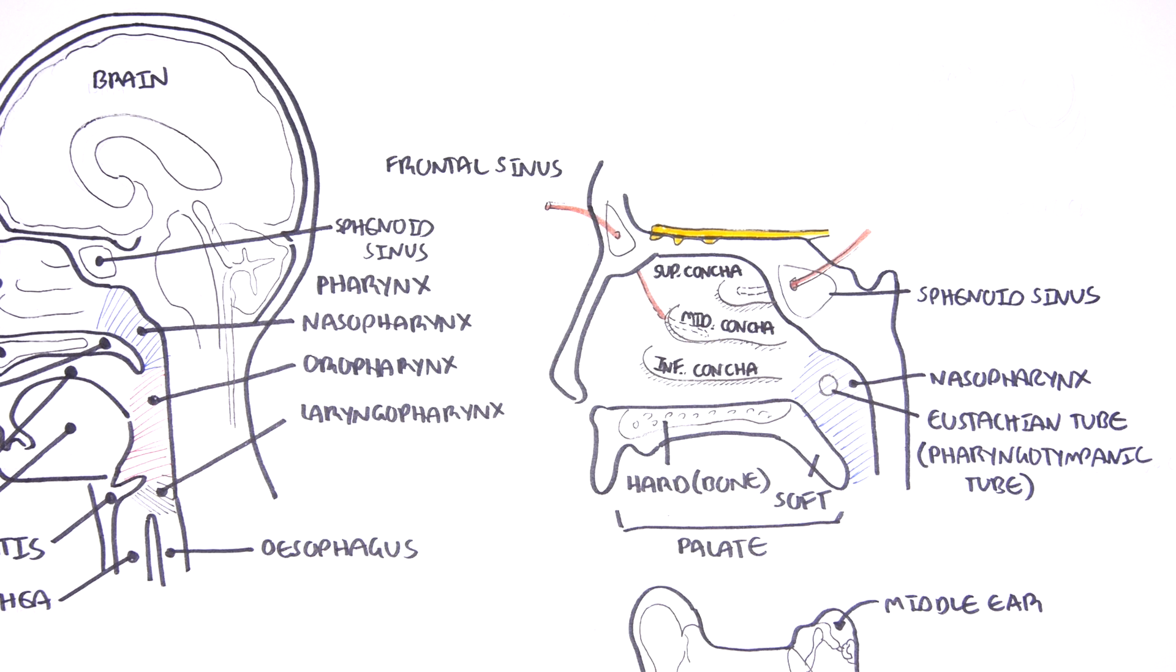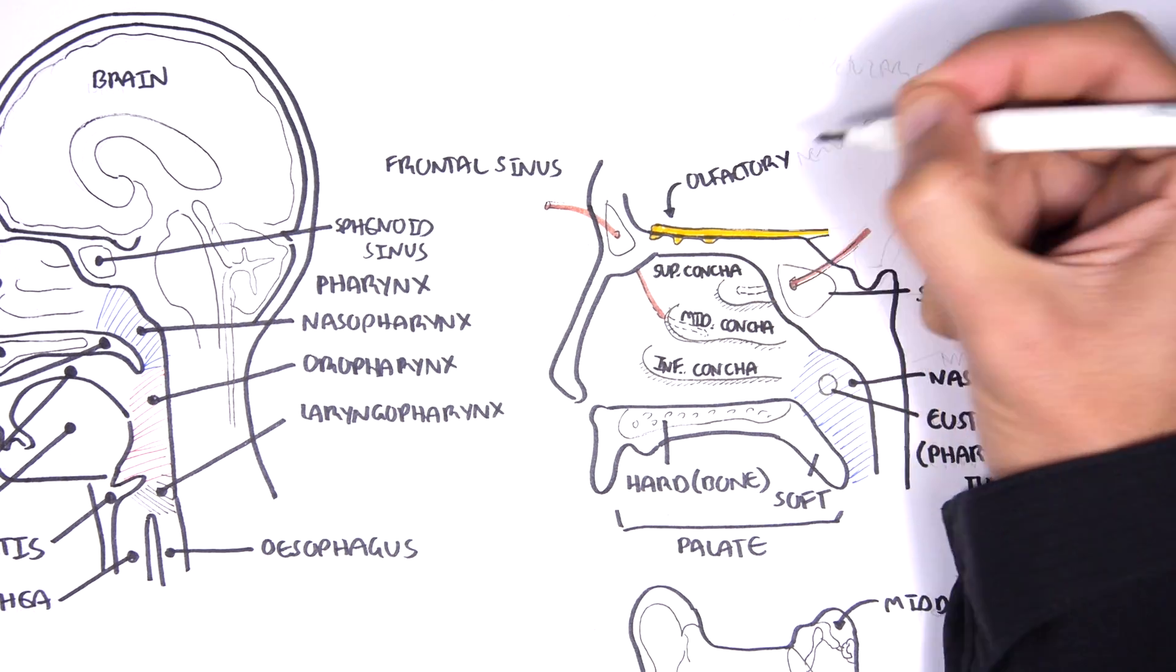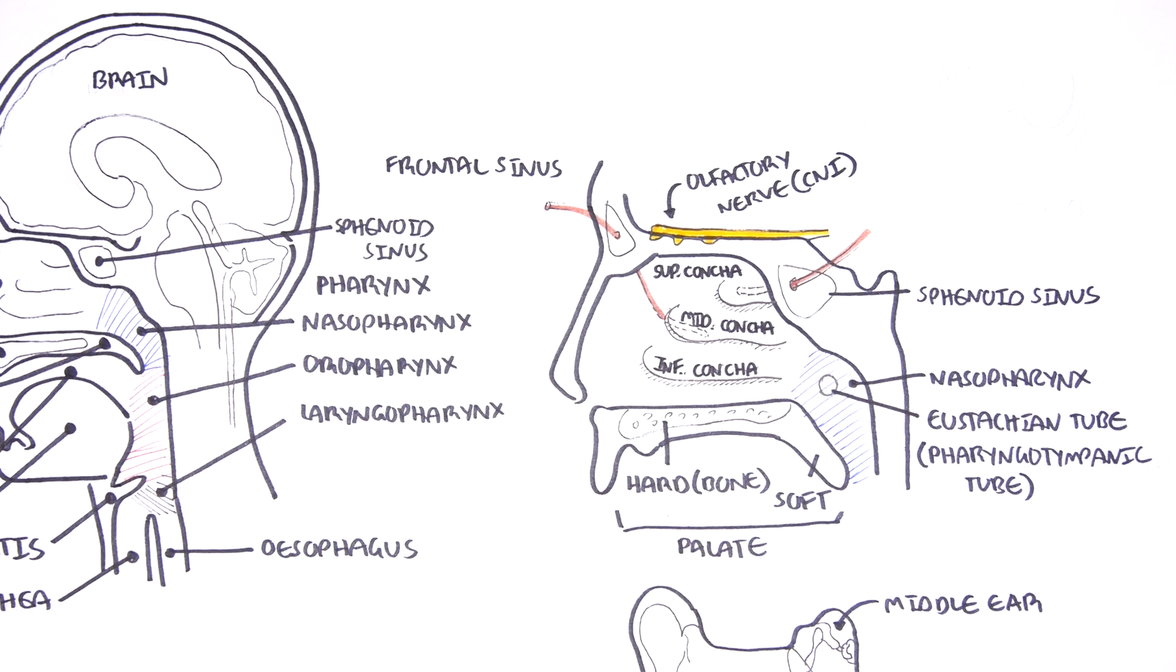And the nasal cavity also has an olfactory segment, which is the area which allows for smell essentially. The olfactory segment is lined with a specialized cell type of pseudostratified columnar epithelium, and these contain receptors for the sense of smell. This segment is located in and beneath the mucosa of the roof of each nasal cavity. These receptors will make up the olfactory nerve, which is cranial nerve number one, and this will be carried back into the brain where smell is perceived.